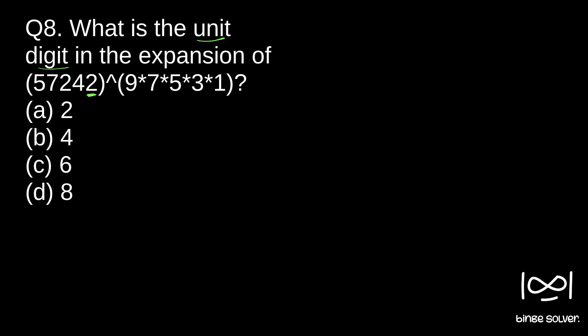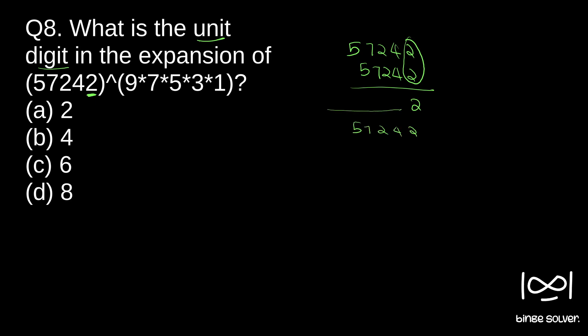In such cases, when this number is multiplied with itself, the unit digit gets multiplied again. For example, 57242 into 57242 — the unit digit of this product is nothing but 2 into 2, so we get 4. If we multiply again with 57242, we get 2 into 2, which gives 4 in its unit place. Multiply again and we get 4 into 2, which is 8.